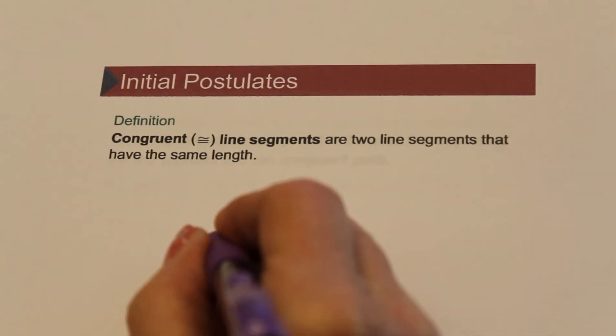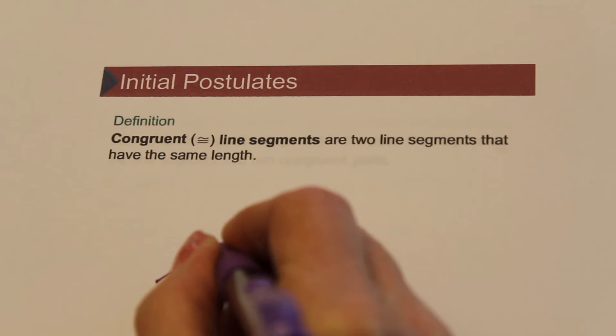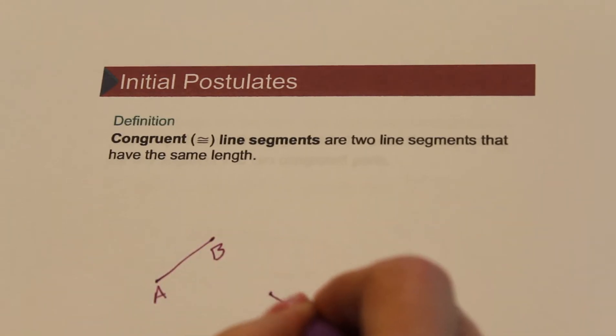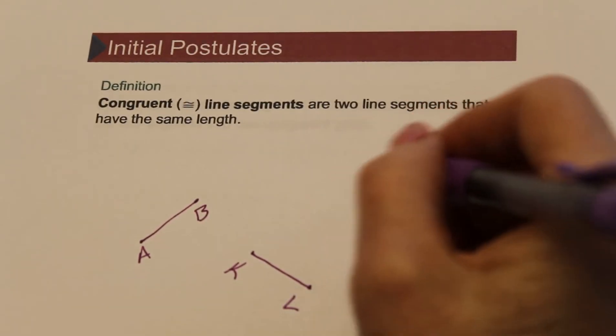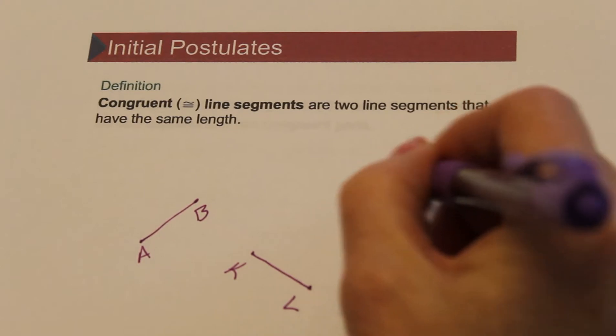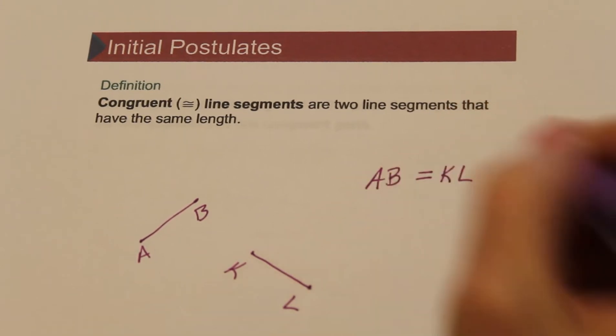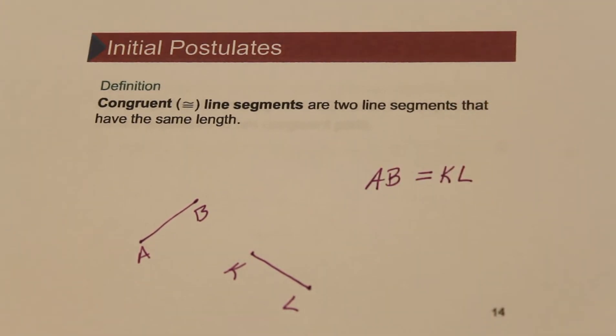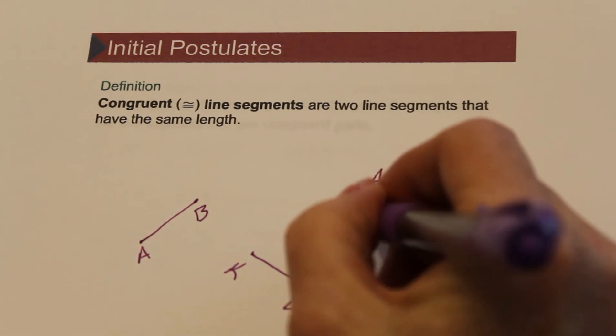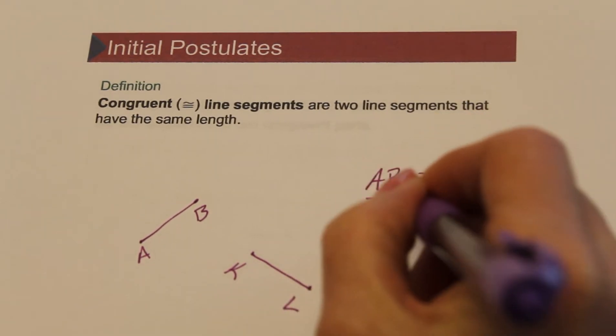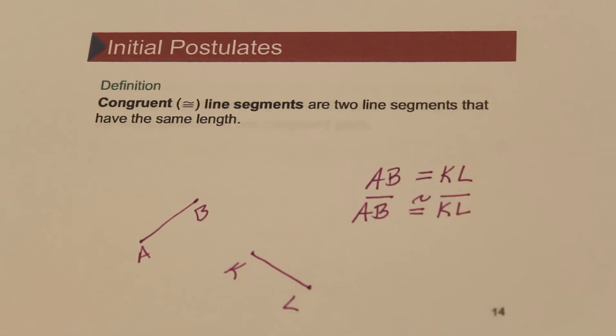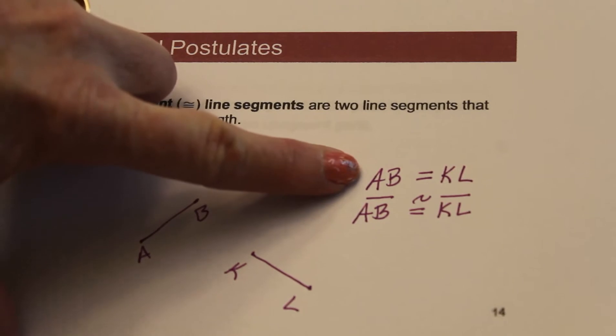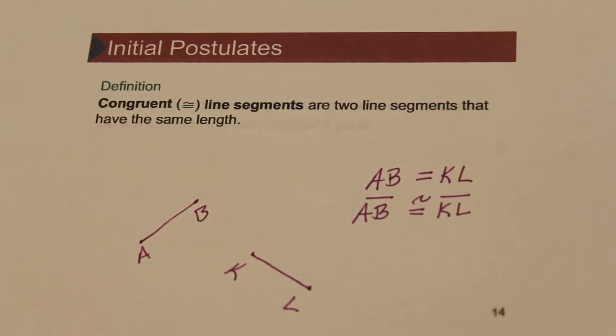So if I had AB here and I had KL here, if I know that the length of AB is the same as the length of segment KL, I could say segment AB is congruent with segment KL. Lengths are equal, segments are congruent.